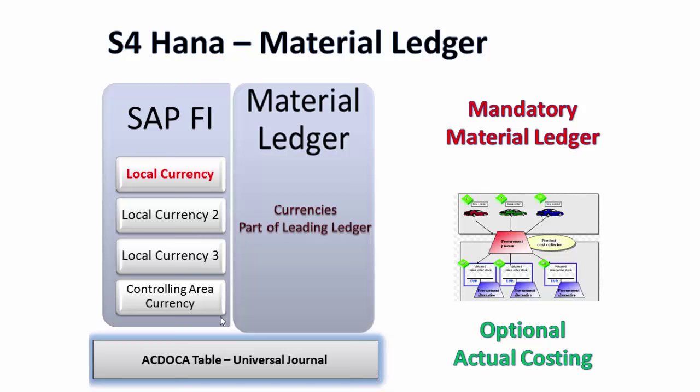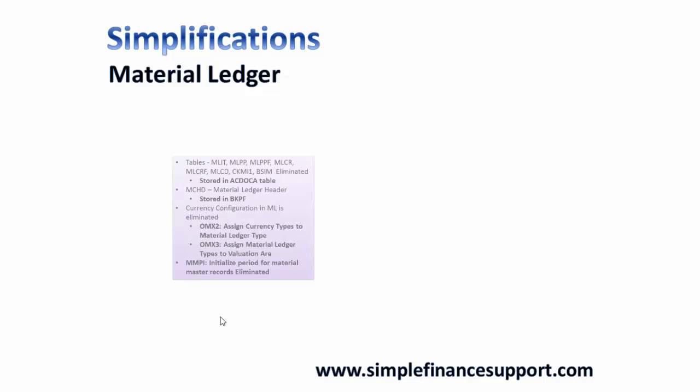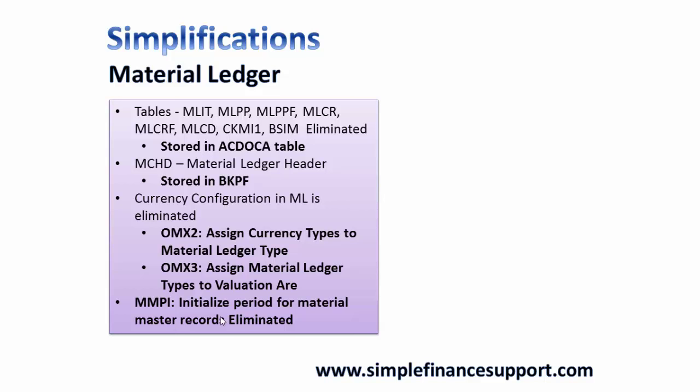From a simplification perspective, many tables such as MLIT, MLPP, MLBPF and others used for storing material ledger information are eliminated. The entire data is now stored in the ACDOCA table — the universal journal. The MCHD table, which is the material ledger header table, is now automatically stored in the BKPF table. Currency configuration is also eliminated because the leading ledger currency itself becomes the material ledger currency. The isolation period for material master records is also eliminated.